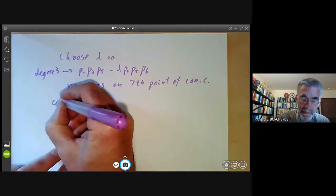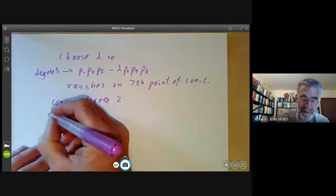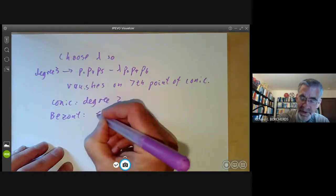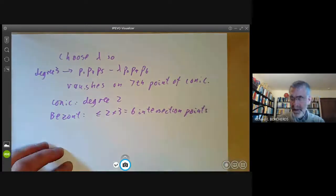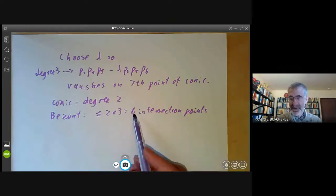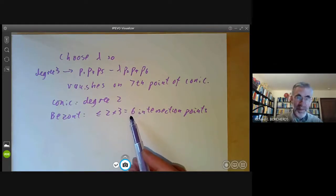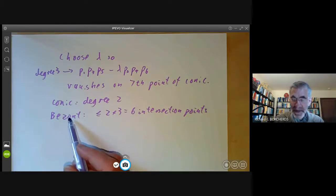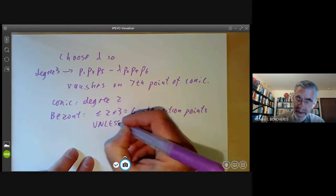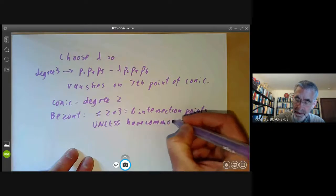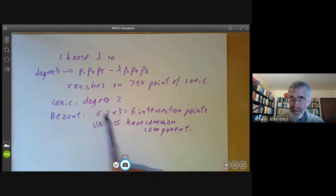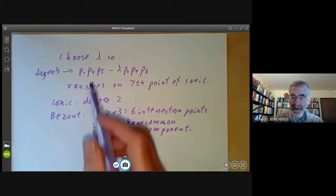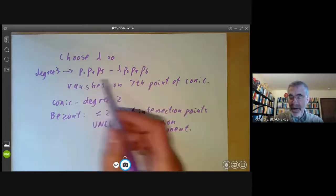So by Bezout's theorem, there are at most two times three equals six intersection points. Okay, well, we seem to have a contradiction because we've got seven intersection points and Bezout's theorem says there are at most six intersection points. Well, that's not a contradiction because if you remember, Bezout's theorem says that there are at most six intersection points unless they have a common component. Well, the conic doesn't split as a product of smaller degree polynomials. So the only possible way they can have a common component is if the conic is actually contained in the degree three curve like this.